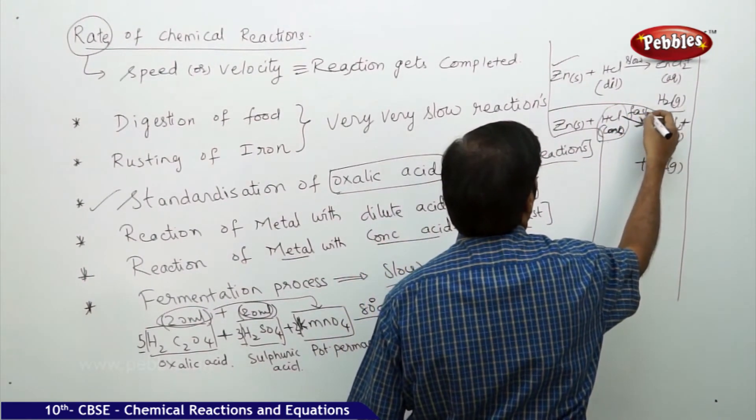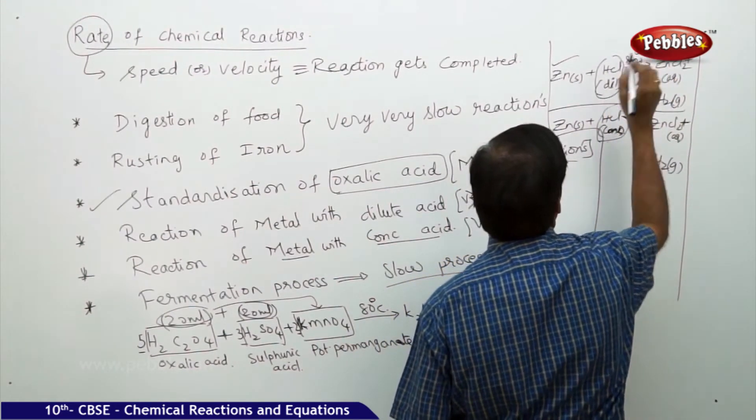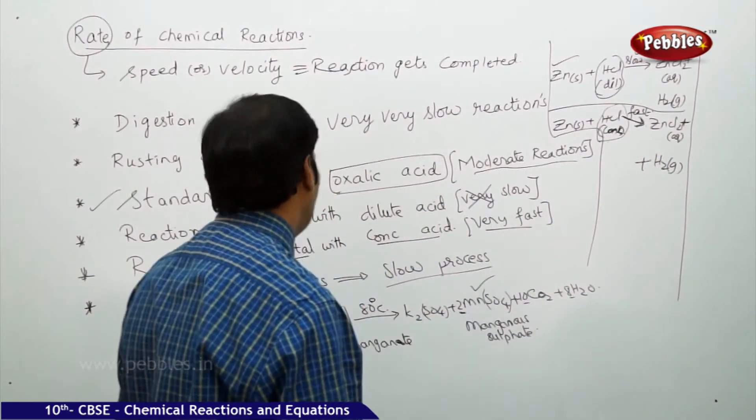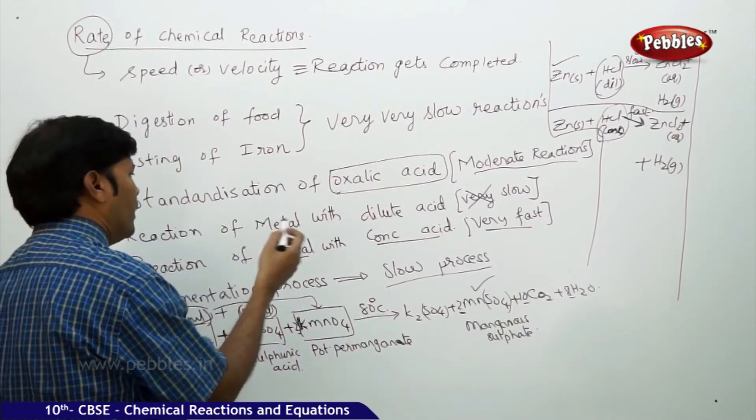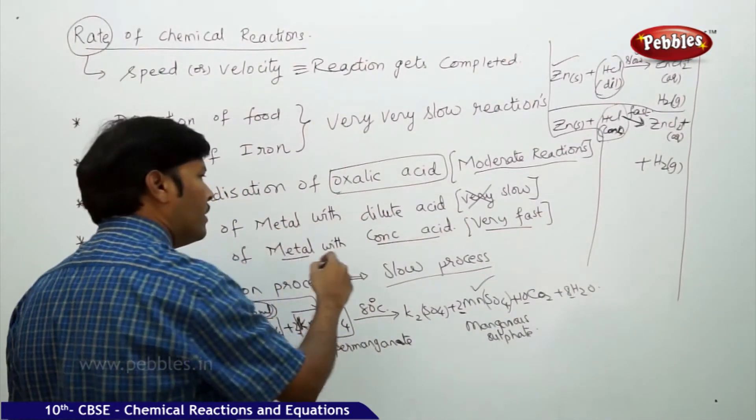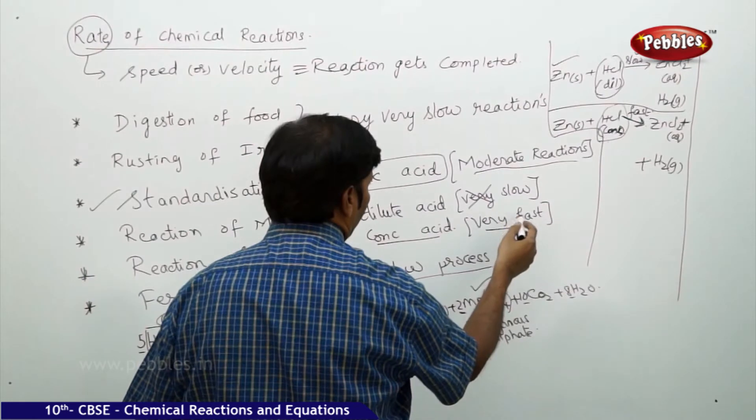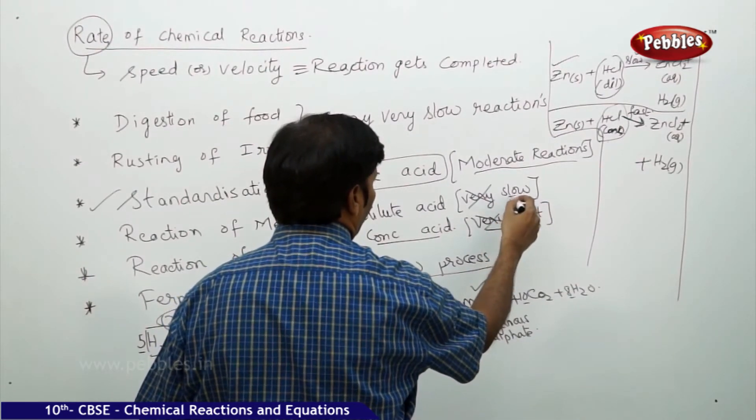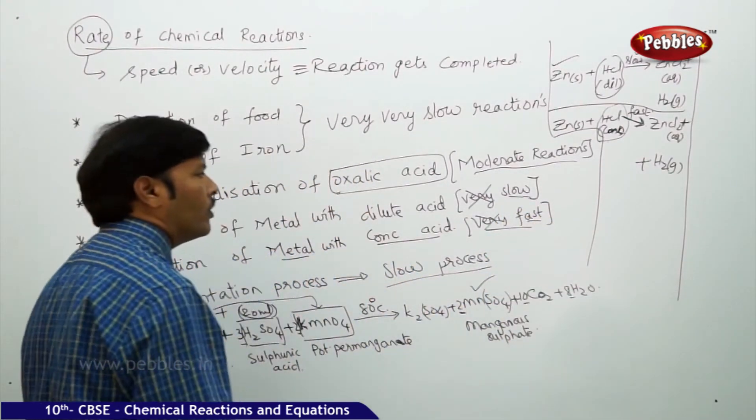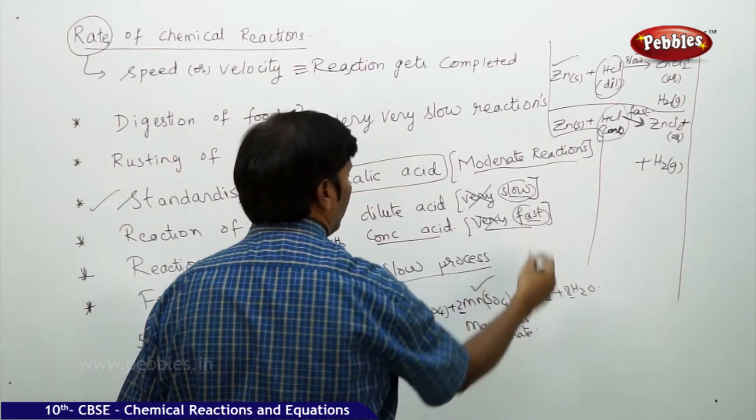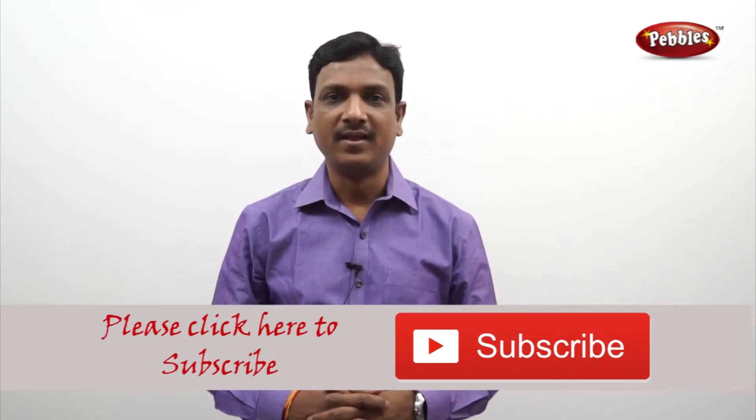Here the acid is dilute, that's why the reaction becomes very slow. In this way we can simply differentiate between very slow reaction or fast reaction. Sometimes you can say simply slow and fast reaction instead of using 'very'.